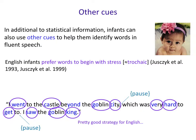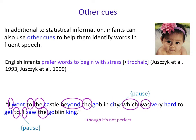And it's not so bad, although there are problems. There are words that are missed because they're not following that stress pattern, like the word 'beyond', which actually has stress on the final syllable. And then there are words that don't seem to have much stress, especially in fluent speech. For example, 'which was very hard to get to' — 'which was' doesn't actually have a lot of stress, so this strategy wouldn't identify 'which' and 'was' as separate words.